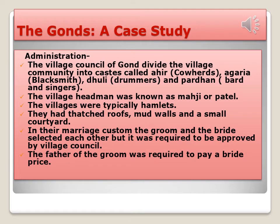The village council of the Gonds divided the village community into castes: Ahirs were cattle herders; Kahats were farmers; Agarya were blacksmiths; Dhuli were drummers; and Pardhan were bards and singers. The village headman was known as Mahaji or Patel. Villages were typically hamlets with thatched roofs, mud walls, and a small courtyard. In their marriage custom, the groom and bride selected each other, but the choice required approval from the village council. The father of the groom was required to pay a bride price.